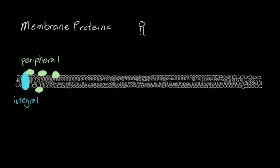Another type of protein is extremely rare. It can appear inside the cell membrane itself, and we call this a lipid-bound protein. The reason it's so rare is because proteins are there to interact with the outside environment, but lipid-bound proteins are stuck on the interior of the cell membrane. So they can't interact with the outside or inside of the cell and don't serve a big functional role.